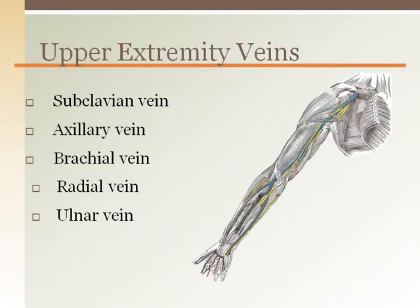After nutrient-waste exchange and oxygen delivery has taken place, blood returns from the arm back to the heart. From the hand, blood enters both the radial and ulnar veins. These veins come together in the antecubital region to become the brachial vein as it travels up the upper arm, which then turns into the axillary vein in the shoulder area and drains into the subclavian vein in the torso.